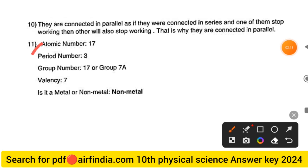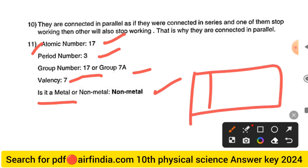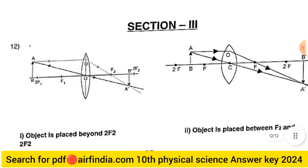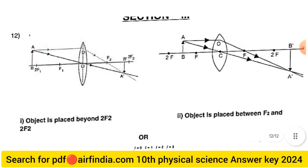Question 11 answer: Atomic number is 17, period number is 3, group number is 17 (Group 7A), valence is 7, and the element is a non-metal. You can note these answers in your table in the paper.